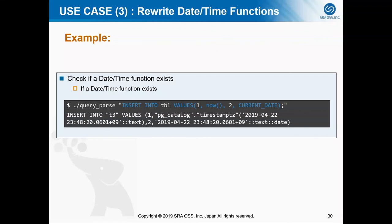Here I will show you an example. In this example query, I use two functions: NOW() and current_date. When I pass this query to the test program, you can see in the result that the NOW() function and the current_date function are rewritten as timestamp constants.